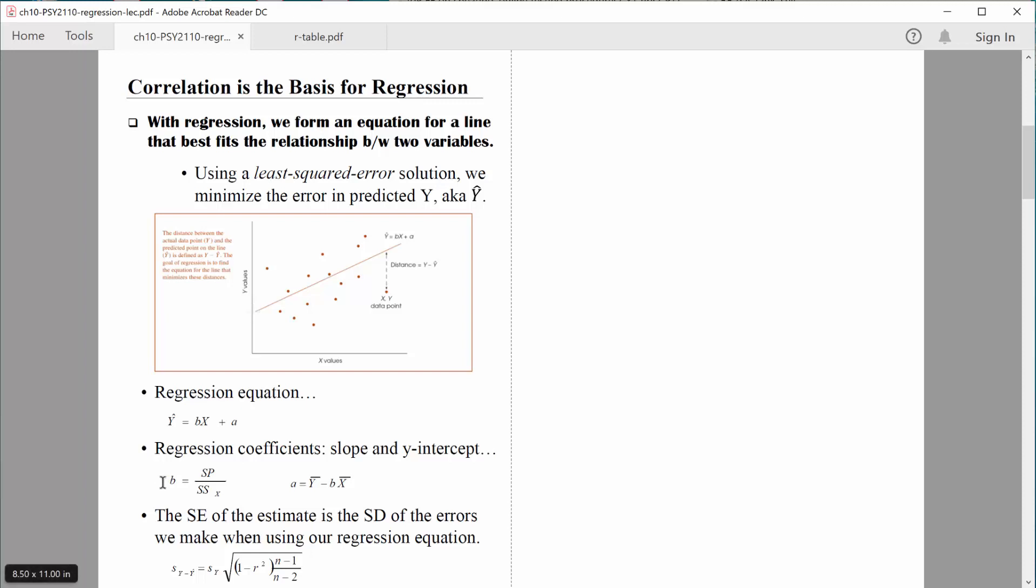In order to compute that slope, you can see it's based on sum of squares for the predictor variable and the sum of the products of the deviation scores. We had to compute that stuff for correlation. So this is where you're seeing the tie-in mathematically between correlation and regression. So typically, we will compute the correlation coefficient between the two variables to see how strong the relationship is and to see the nature of the relationship, if it's positive or negative. And then we can use those values from that correlation analysis to compute that slope for the regression equation.